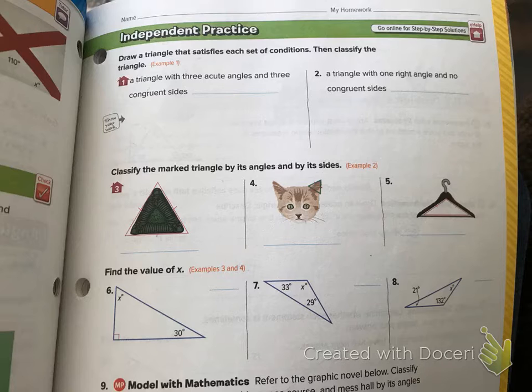Okay, to begin, the directions ask us to draw a triangle. So we're going to have to make sure that we draw a triangle for both questions 1 and 2 that satisfies each set of conditions, then classify the triangle. Question number 1: they're asking for a triangle with 3 acute angles and 3 congruent sides.